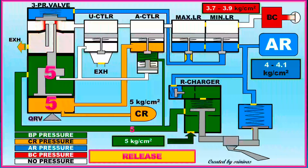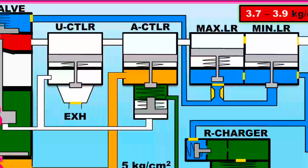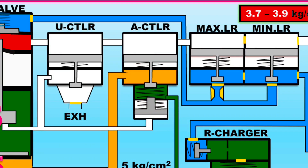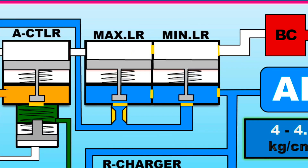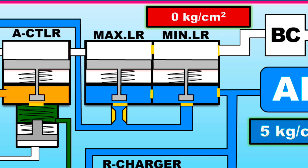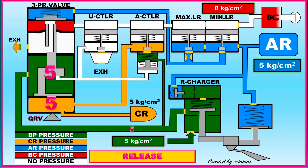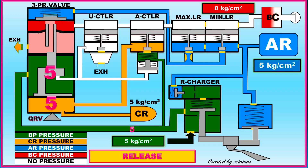When BC pressure falls below 3.8, the maximum limiter opens. When BC pressure reaches 0.8, the minimum limiter opens. When BC pressure reaches 0.4, the U controller opens. When BC is fully released, AR will be fully charged to 5 kg per cm². If AR is not fully charged, BC will not be applied if brakes are applied again. It takes 1 minute for AR charging to reach 4 to 5 kg per cm². Therefore, the release time is 1 minute for slow release through the release choke.